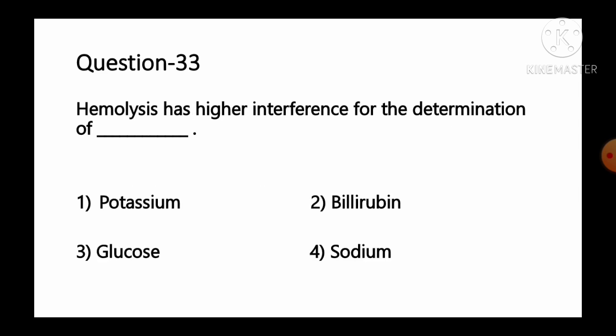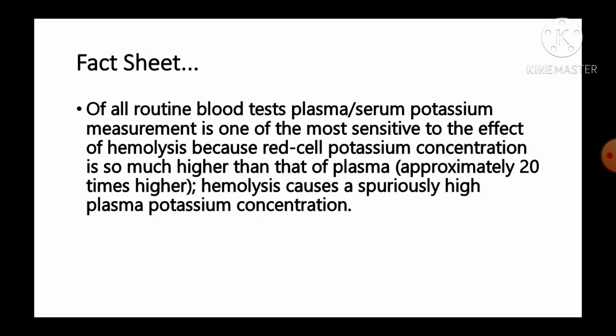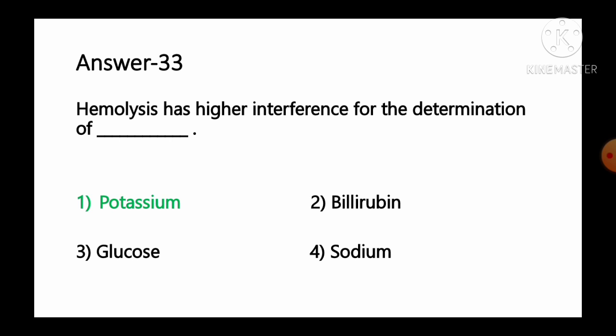Question number 33: Hemolysis has higher interference for the determination of — option 1 potassium, option 2 bilirubin, option 3 glucose, option 4 sodium. Of all routine blood tests, plasma or serum potassium measurement is one of the most sensitive to the effect of hemolysis, because red cell potassium concentration is approximately 20 times higher than that of plasma. Hemolysis can cause a spuriously high plasma potassium concentration. So option number 1, potassium, is the correct answer.